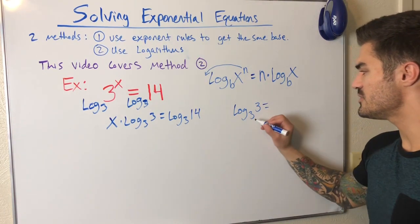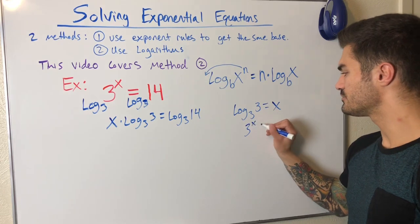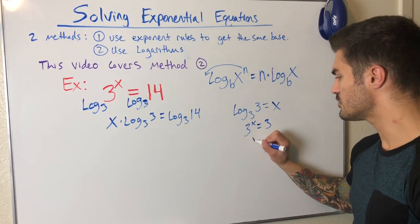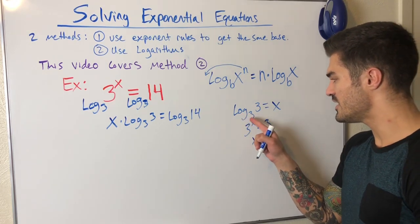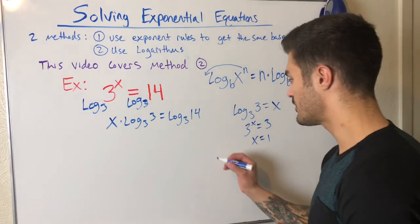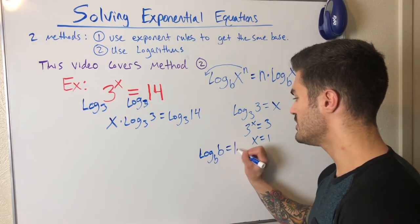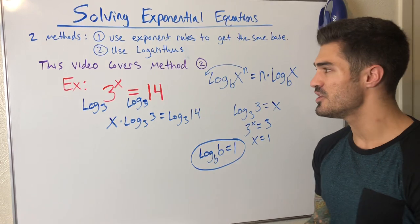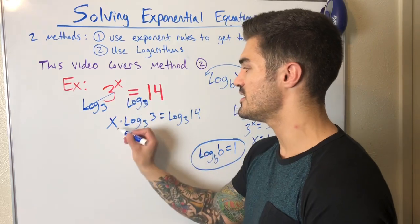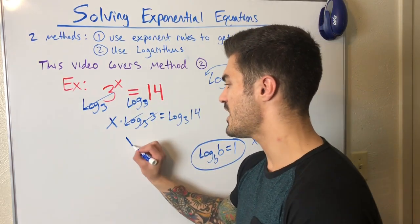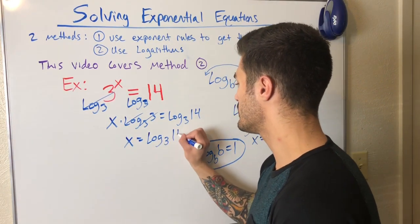Log base 3 of 3 — what is this? It means 3 to the what power gives you 3, which equals 1. In general, log base B of B always equals 1. So from here on out, when I take log base 3 of both sides, I'll immediately cross out log base 3 of 3 and write just X, because it equals 1. I'm left with X on the left-hand side.